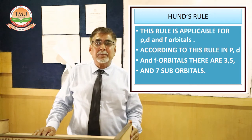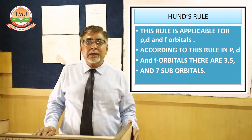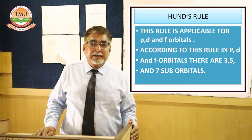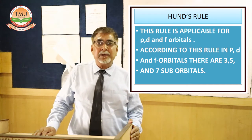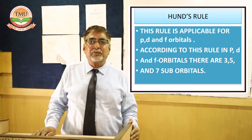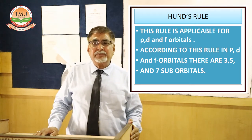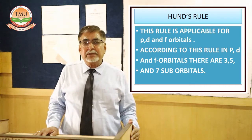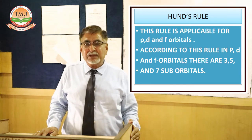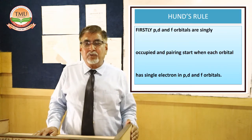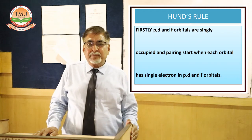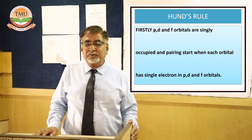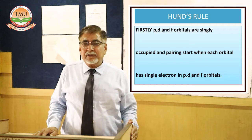The third rule is the Aufbau Principle, which is a German expression meaning construction — we are adding electrons into different orbitals. It provides a simple scheme: the first shell has 1s; the second has 2s and 2p; the third has 3s, 3p, and 3d; the fourth has 4s, 4p, 4d, and 4f; the fifth has 5s, 5p, 5d, and 5f; and further shells follow with 6s, 6p, 6d, and 7s.